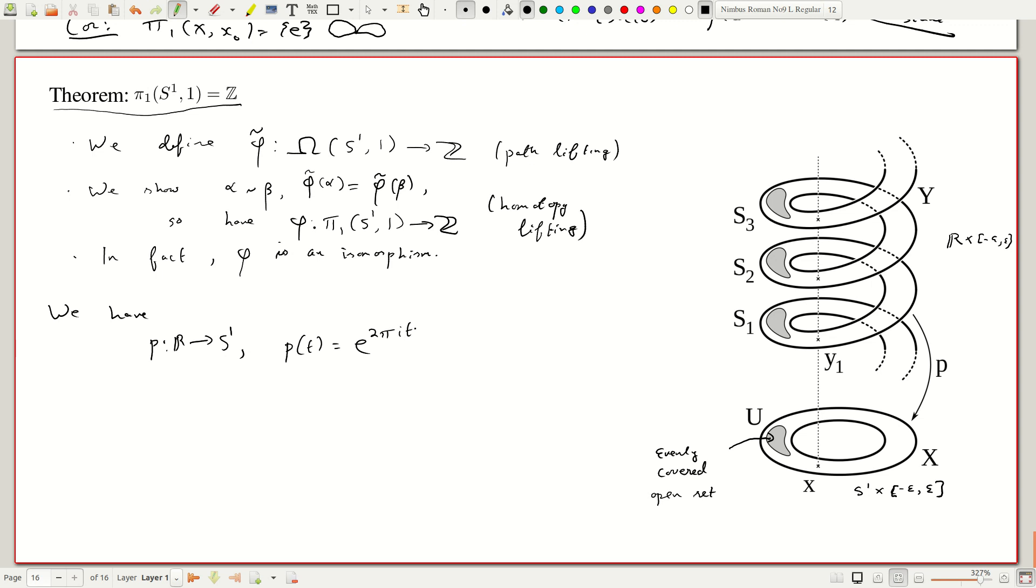So, we have in the case of circle p from ℝ to S¹ such that p(t) is e^(2πit). You can think of this as the angle map. So, we have a map. Given the angle, you get a point on the circle. But given a point on the circle, we do not really have an angle. We have an angle well defined only up to 2π. So, it is not an invertible map. But we have a map from ℝ cross minus epsilon epsilon or in this case simply ℝ to the circle. And with respect to this, this is evenly covered. So, here is the definition.